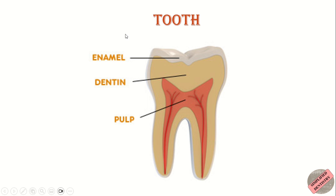To understand dental caries, it is important to know the structure of a tooth. A tooth is composed of three main layers: enamel, dentine, and pulp. The outermost layer, enamel, is the hardest substance in the human body and protects the underlying layers. Dentine lies beneath the enamel and is softer but still sturdy. The pulp, located in the innermost part of the tooth, contains nerves and blood vessels.